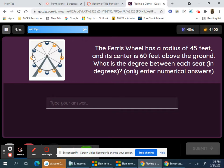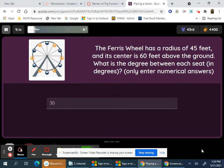What is the degrees between each seat here? You just count the seats: 1, 2, 3, 4, 5, 6, 7, 8, 9, 10, 11, 12. So 360 divided by 12, it would be 30 degrees.